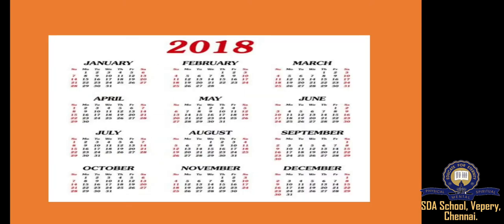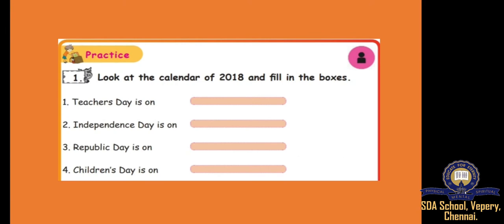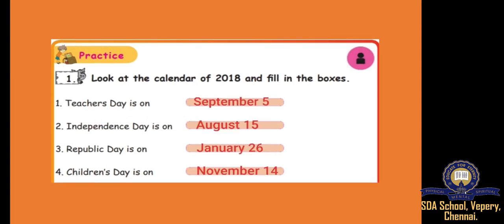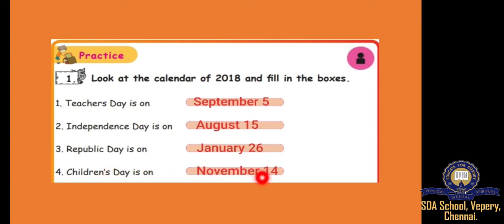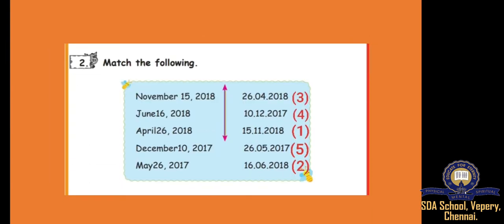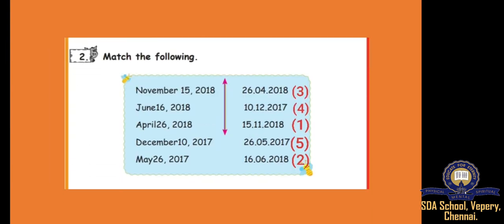We have seen the 2018 calendar and we did this exercise in Zoom classes and in the last class also. Teacher's Day is on September 5th. Independence Day is August 15th. Republic Day is on January 26th. Children's Day is on November 14th. And then we did match the following also.